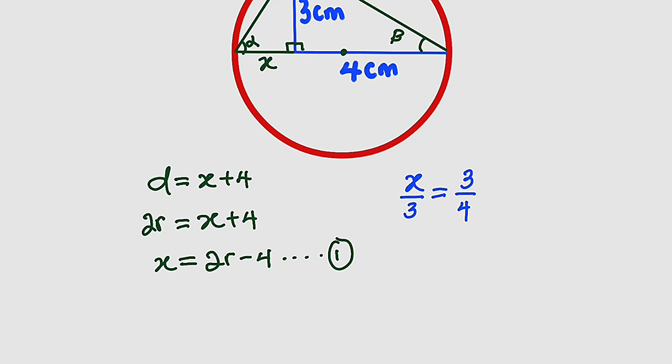So from here we can cross multiply. x times 4 is 4x, 3 times 3 is 9. We can divide both sides by 4. x is equal to 9 divided by 4. So this is equation number 2.